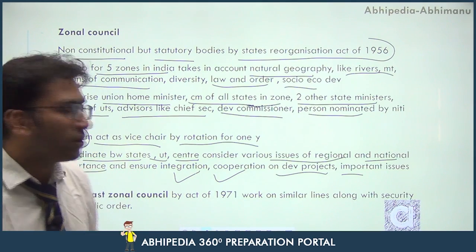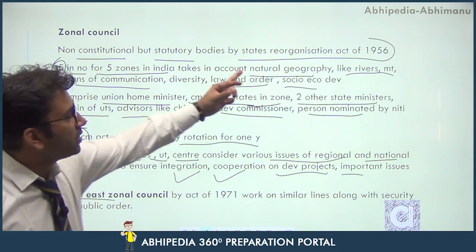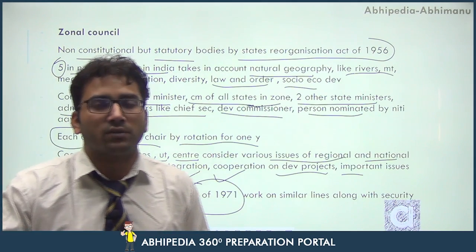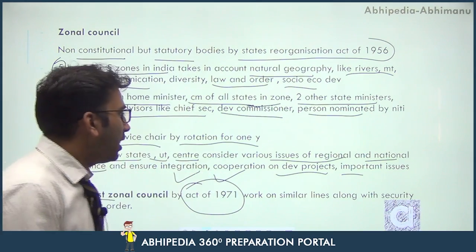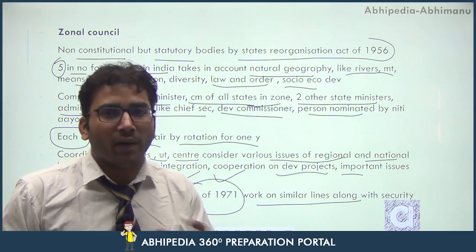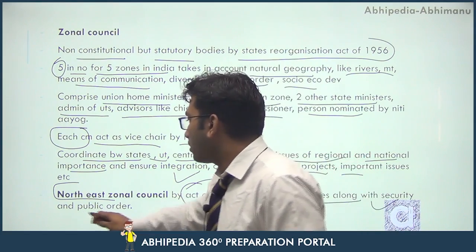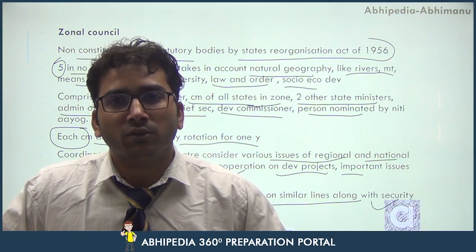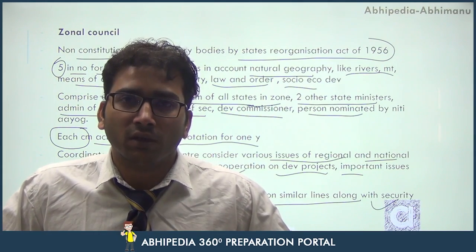There is also a sixth Zonal Council — the Northeast Zonal Council — which was not created by the State Reorganisation Act but by a separate act of 1971, called the Northeast Zonal Council Act of 1971. This is because of the peculiarity of the Northeast compared to the rest of the country. Two additional aspects were added to its terms of reference: security and public order, due to law and order problems in the Northeast.